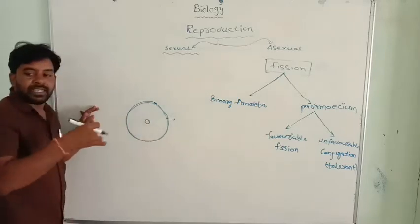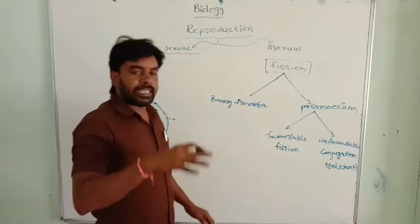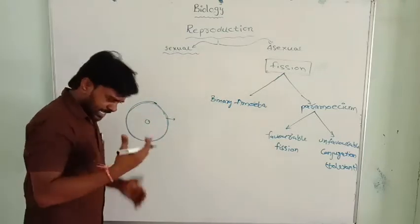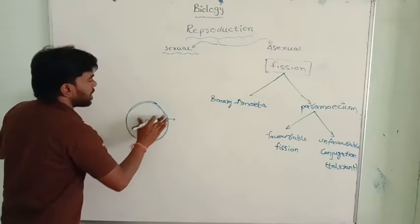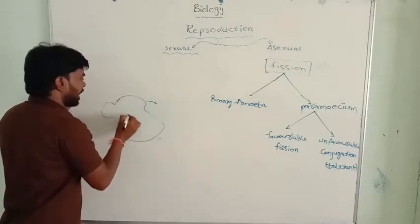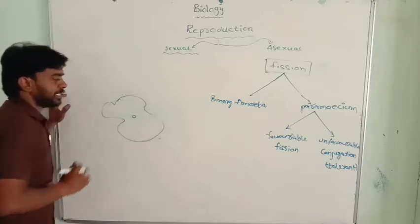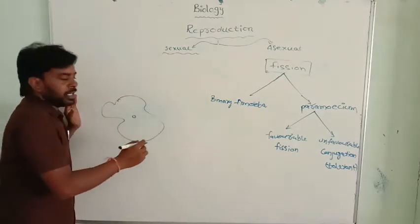Unicellular organism in the sense, the organisms which are made by only one cell. Here only one cell can perform all the functions like respiration, nutrition, excretion. All these functions are done by only one cell. Here amoeba is a shapeless organism. It is only one cell.